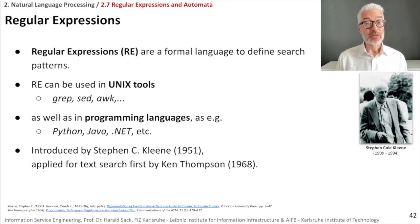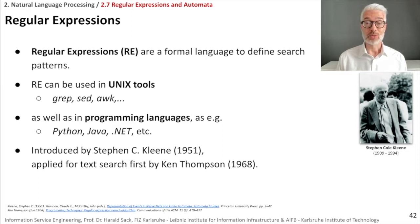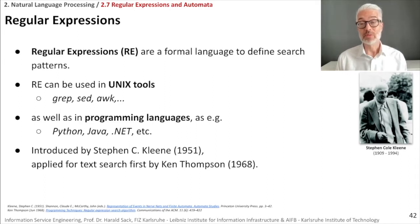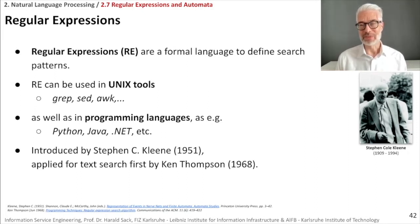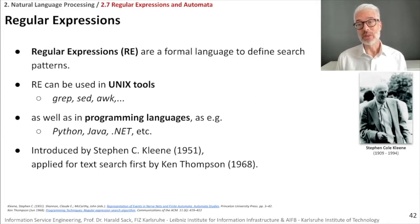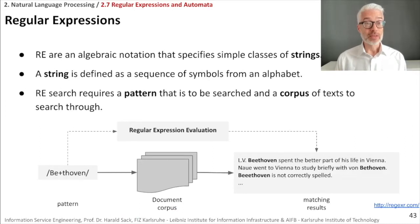The first time regular expressions were used for text and pattern search was by Kenneth Thompson in 1968. He was a pioneer of computer science who worked mostly at Bell Labs. He designed and implemented the original Unix operating system, invented the B programming language — a predecessor of C — co-created the Plan 9 operating system, and for nearly two decades has worked at Google, where he co-invented the Go programming language.